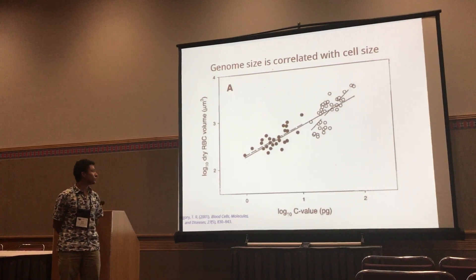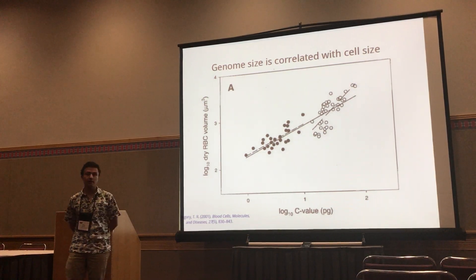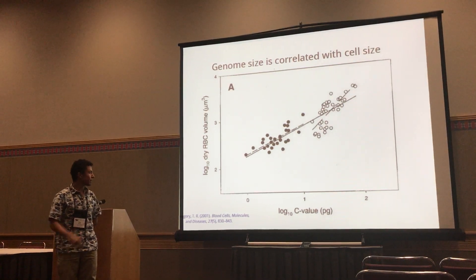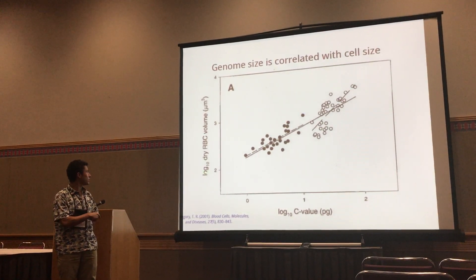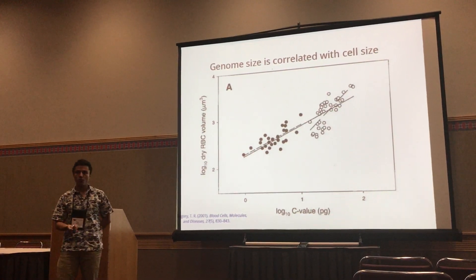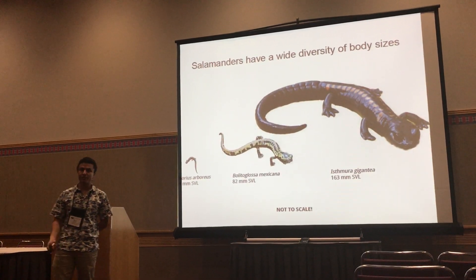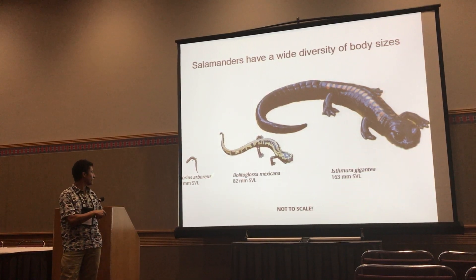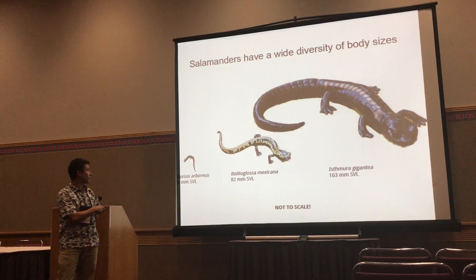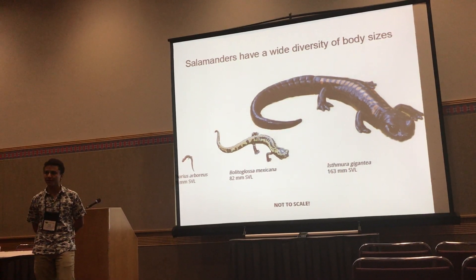Genome size is correlated with cell size. Here, in the black dots, we see the toads and frogs, and in the white dots we see the salamanders. There is a strong correlation between the volume of the red blood cells and the C-value. Salamanders also have a wide diversity of body sizes — some are very tiny, like Thorius alborus at 90 millimeters in snout-vent length, and others go all the way to Pseudoeurycea mulai gigantia at 163 millimeters.